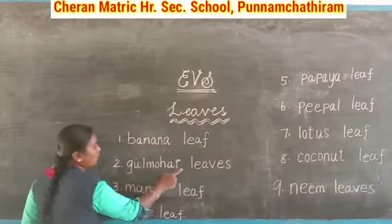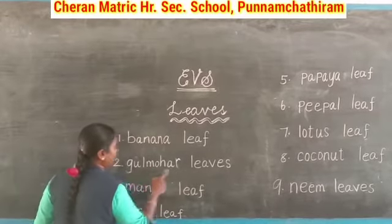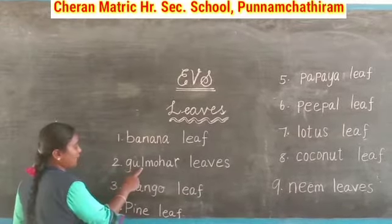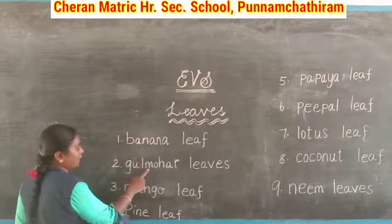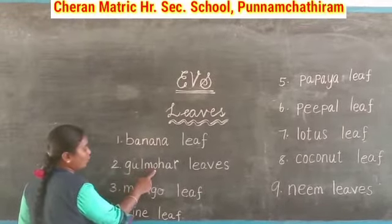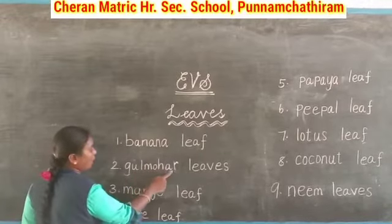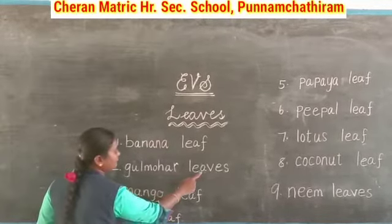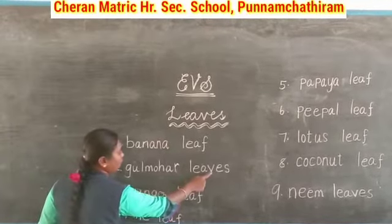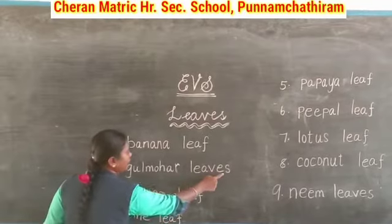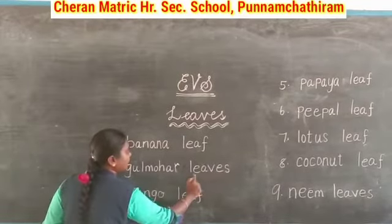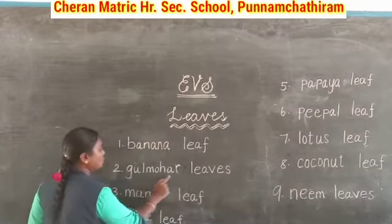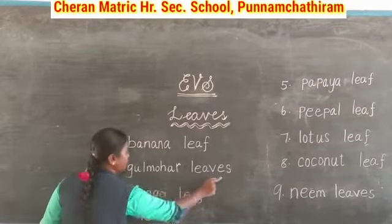Gulmohar leaves: G, U, L, M, O, H, A, R — gulmohar. L, E, A, V, E, S — leaves. Gulmohar leaves.